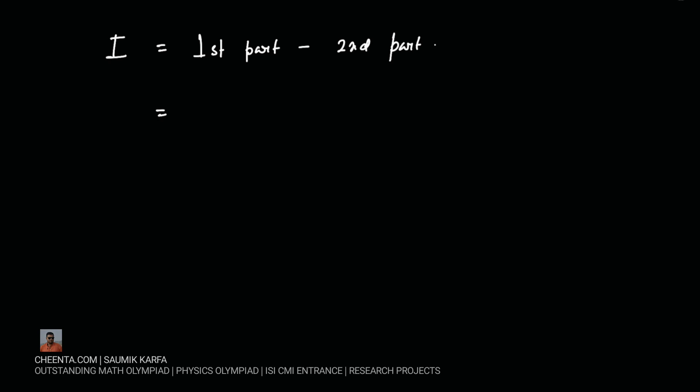So that would be equal to first part we found out, we evaluated it as pi over 2 log b minus log a, and second part we found out to be just I, so we are getting minus I here. So basically I is equal to pi over 2 log b minus log a minus I.